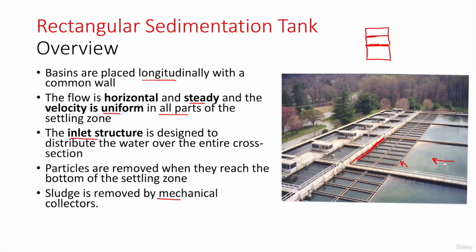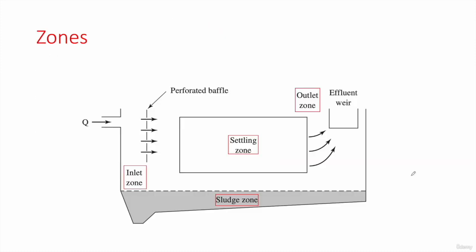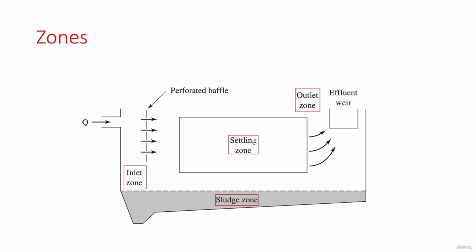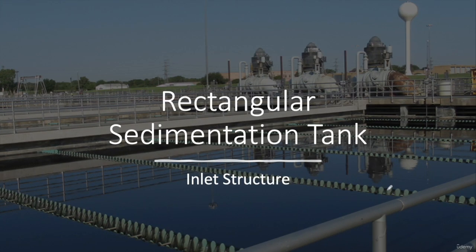In the next few slides we will be designing the four zones of the sedimentation tank: the inlet zone, usually consisting of perforated baffles that uniformly disperse the water within the tank; the settling zone where particles settle down; the sludge zone consisting of the scraper, hopper; and the outlet zone consisting of the effluent weir. We will start with the first component — the inlet structure.